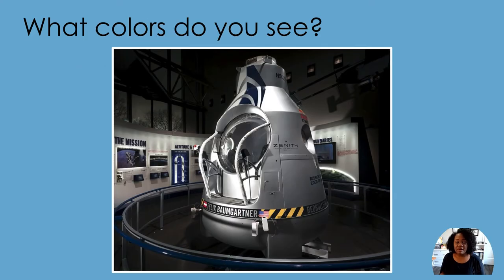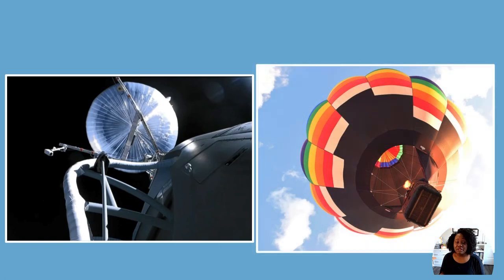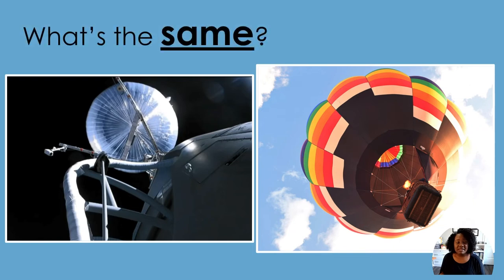What colors do you see on the Stratos? This is a picture from the Stratos gondola looking up at the balloon. This is a picture looking up at a hot air balloon. What's the same? I noticed that both gondolas are hanging underneath the balloon.